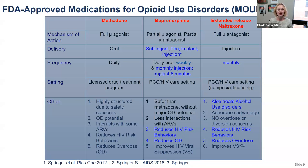Starting with methadone — it's an oral daily medication, and it is required that you provide it within a licensed drug treatment program. It requires highly structured clinical and pharmacy settings. It does have overdose potential being a full agonist, and it does interact with some antiretrovirals, which we'll talk about. However, it reduces HIV risk behaviors and overdose, so methadone is a good FDA-approved option.